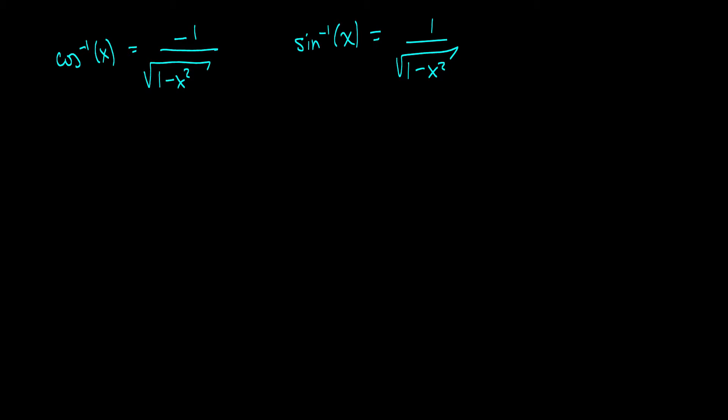Okay, so, here is the problem. y is equal to sine inverse of x all cubed. Okay, so the derivative is, well, we just use the chain rule. So this is 3 times sine inverse of x all squared,